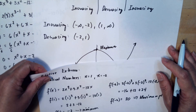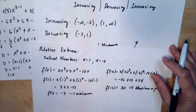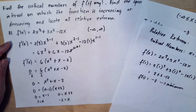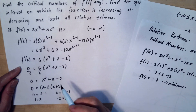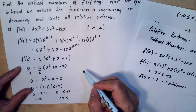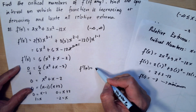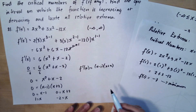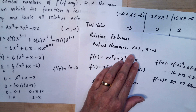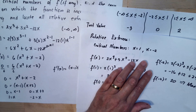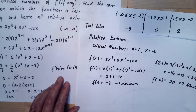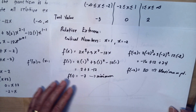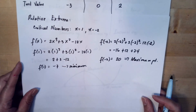To recap: the derivative factors as (x minus 1)(x plus 2). The critical numbers are x equals 1 and x equals negative 2. The relative maximum value is 20 at x equals negative 2, and the relative minimum value is negative 7 at x equals 1.